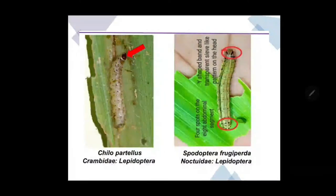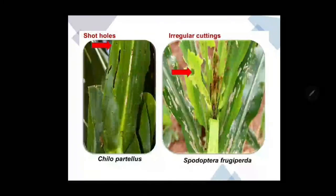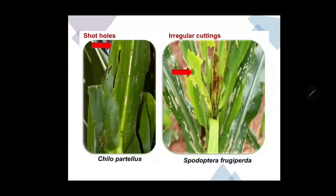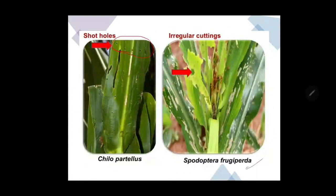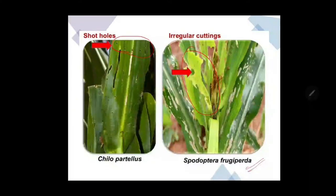It can also be compared with Chilo partellus, which is a stem borer causing similar damage on cereal crops. Chilo partellus causes similar holes on the margin of the leaf blade — about 3 to 4 marks in the affected area — but the spots are not coalesced. In case of Spodoptera frugiperda, it initially makes such holes, but later feeds on them, coalescing them and consuming the entire leaf structure. In the initial stage, the attack may resemble Chilo partellus.